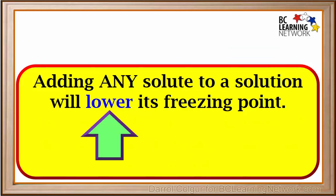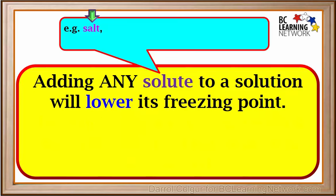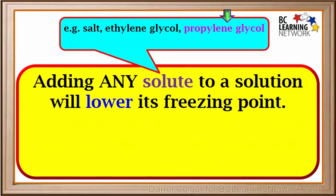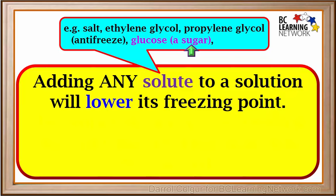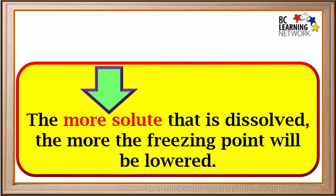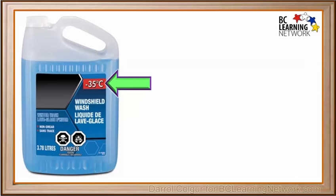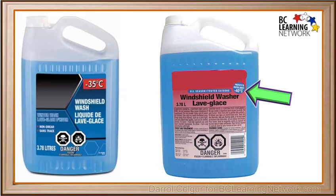It should be noted that adding any solute to a solution will lower its freezing point. That includes the solutes we talked about here — salt, ethylene glycol, and propylene glycol, two substances that can be used for antifreeze in vehicles or de-icing fluids for planes — as well as glucose, which is a type of sugar, and urea, but there are many more solutes that would do the same thing. It's also important to know that the more solute that is dissolved in a given volume, the more the freezing point of a solution will be lowered. For example, there is enough solute dissolved in one windshield washer fluid to lower its freezing point to minus 35 degrees Celsius, whereas another type has enough solute to lower its freezing point to minus 40 degrees Celsius.